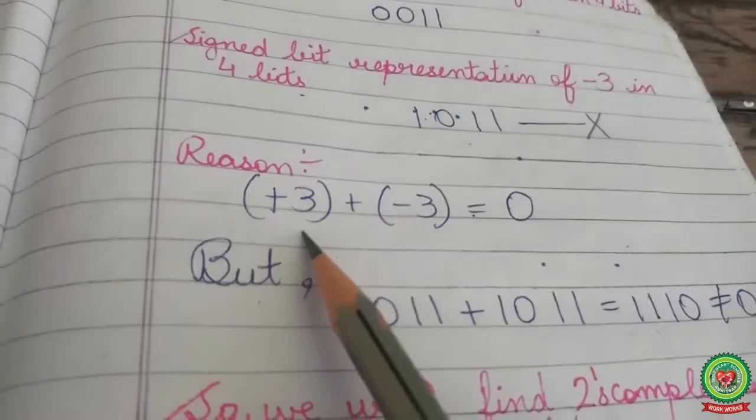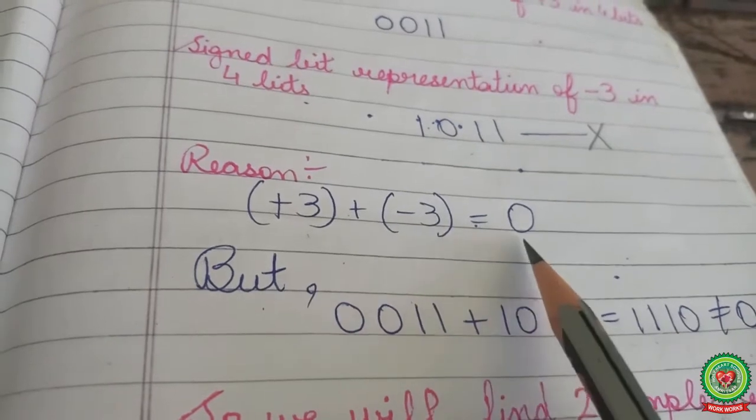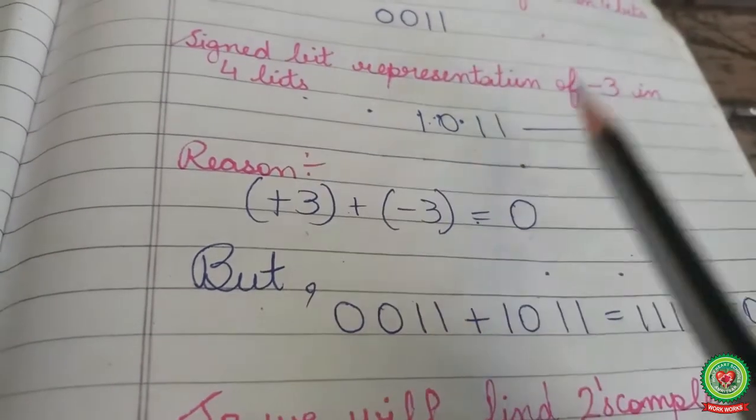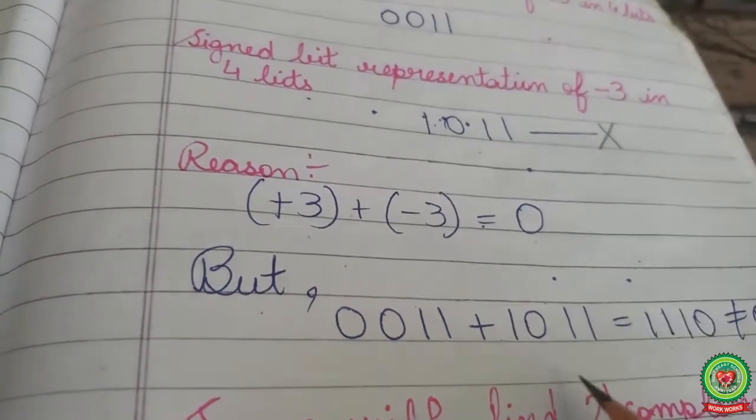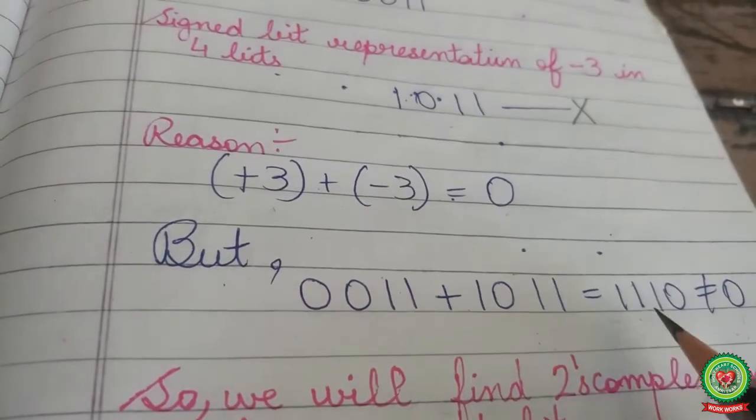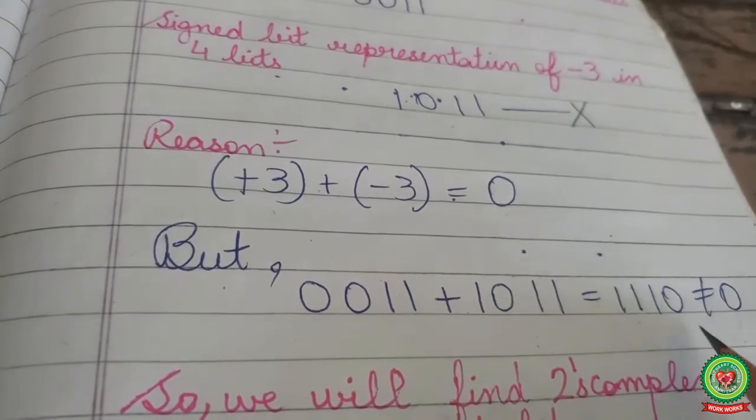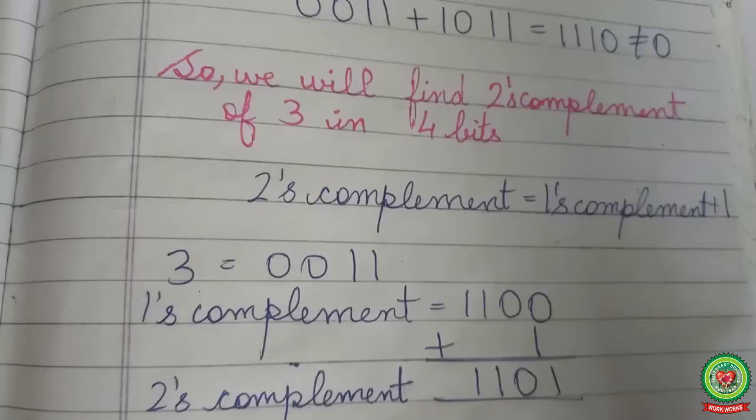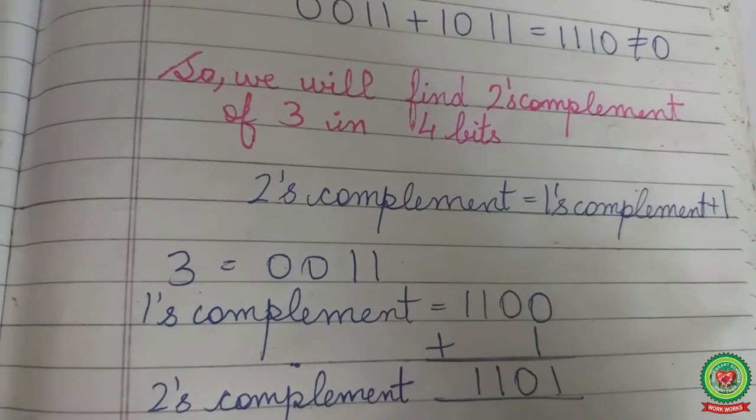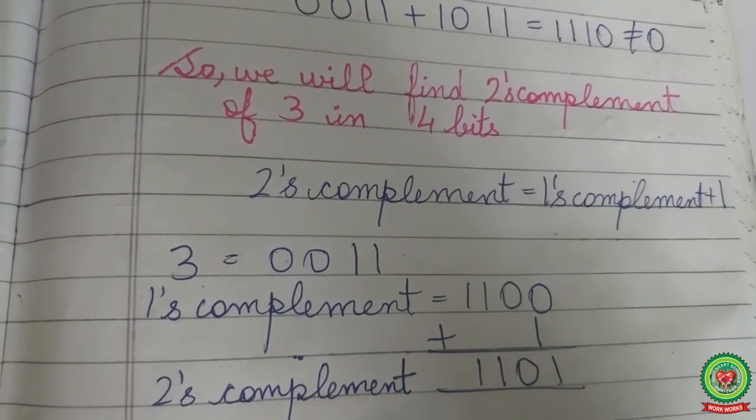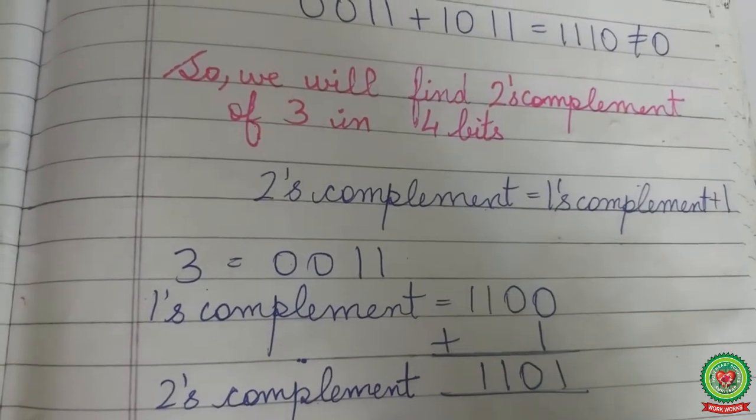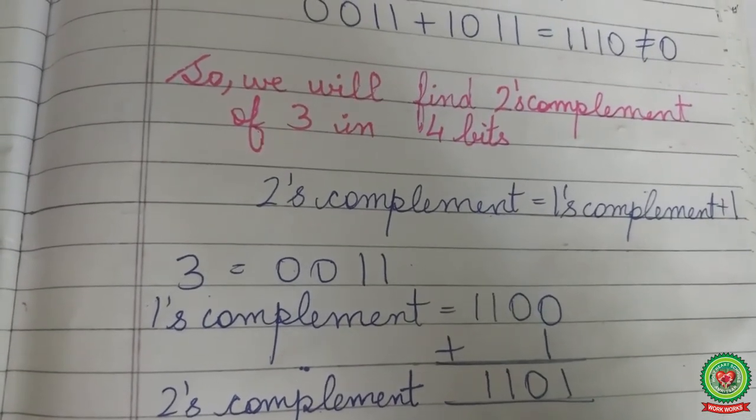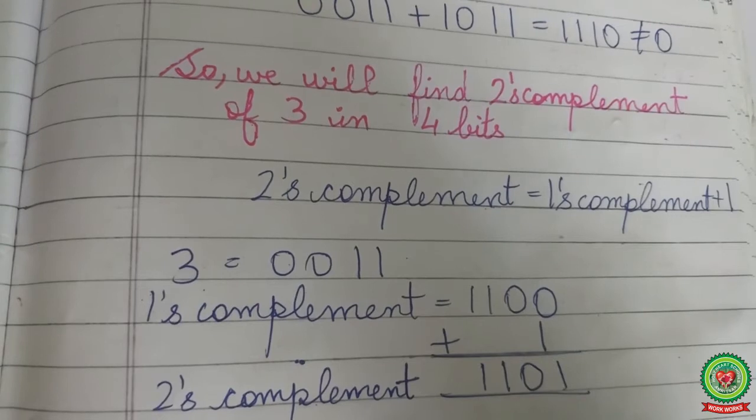Because plus 3 plus minus 3 must be 0. But 0011 plus 1011 equals 1110, that is not equal to 0. Students, we can find negative representation of a number by two's complement. So here we will find two's complement of 3 in 4 bits.